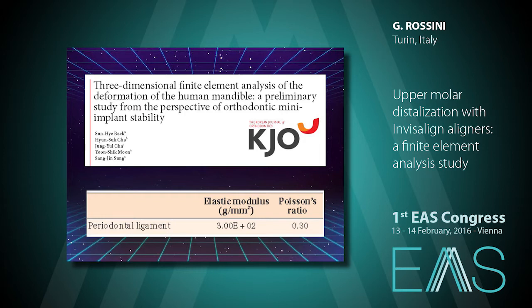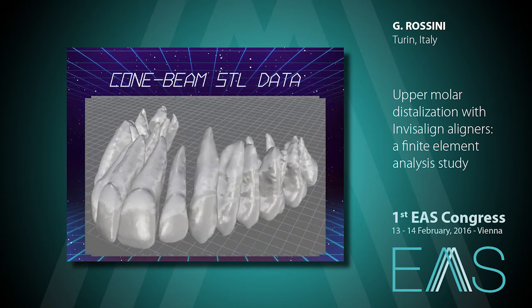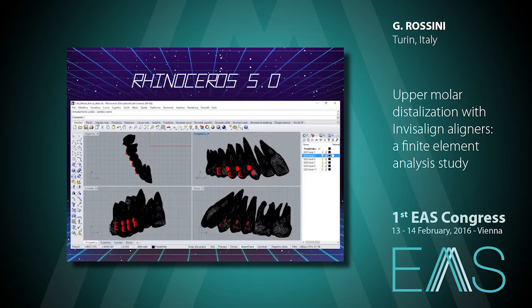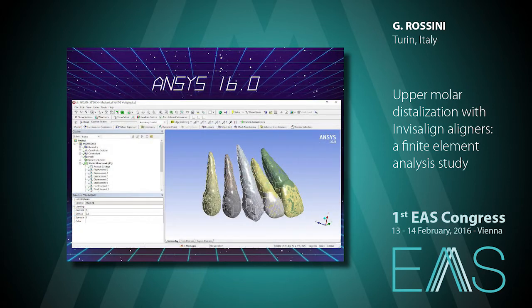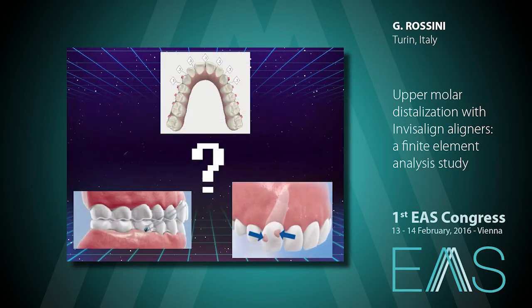We extracted STL data from a cone beam CT with isolated teeth, and with Rhinoceros 3D we built the attachments and put the CAD model into ANSYS, from which we built bone, periodontal ligament, attachments, and aligners. We then focused on three main questions: is the sequentialization of movement worthwhile? Is it worth using elastics and how? And are attachments useful for this kind of treatment?